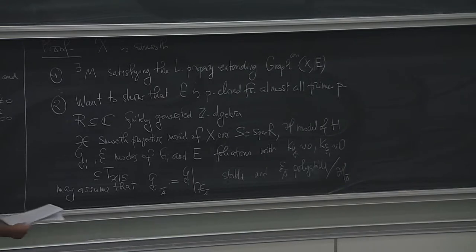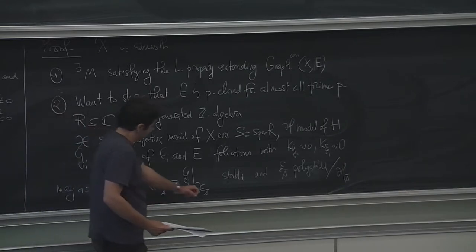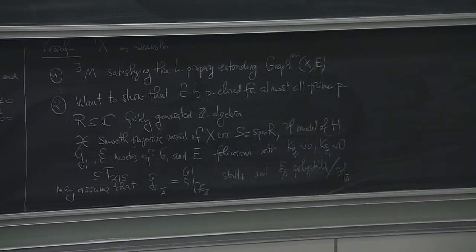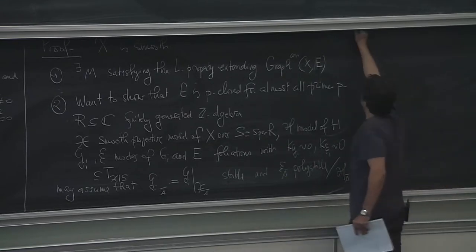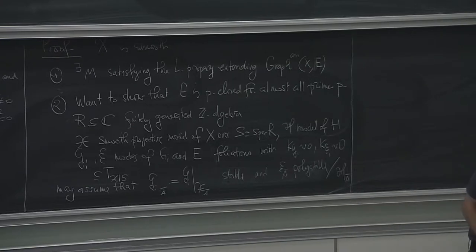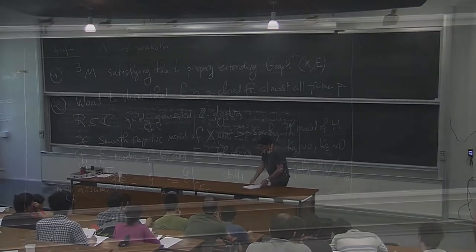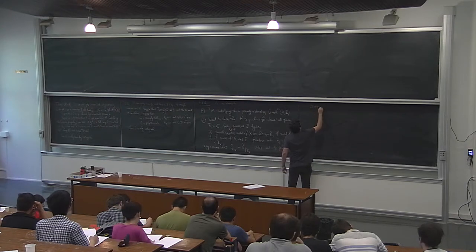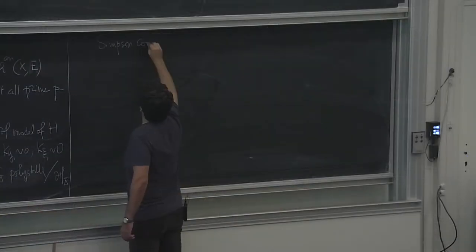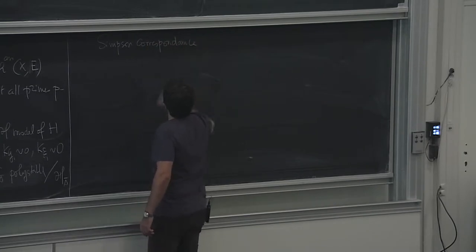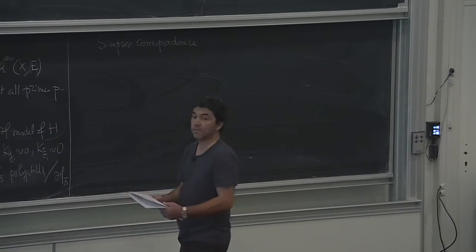We have to prove that E s-bar, when s is closed, is p-closed, where p is the characteristic. Let me recall a part of the Simpson correspondence in characteristic zero — because this is wrong in positive characteristic, but there is something else.